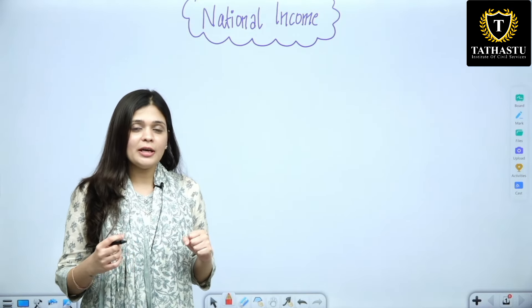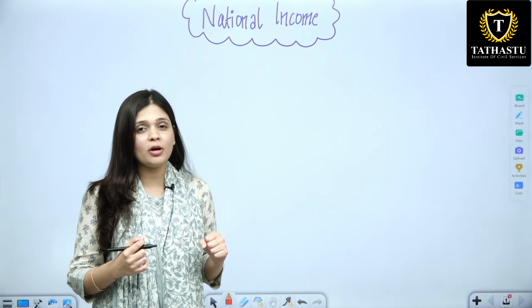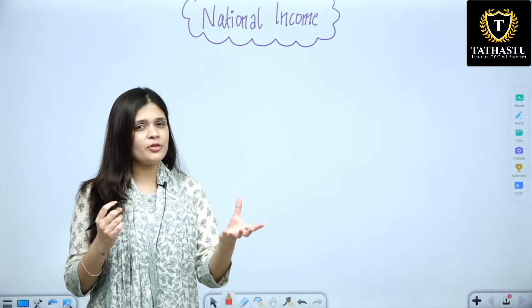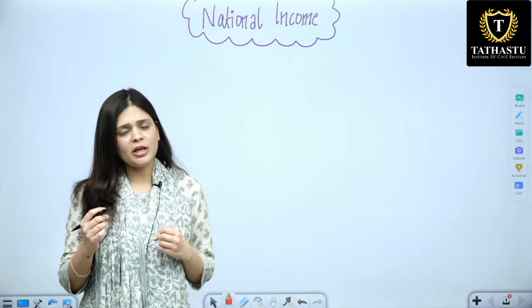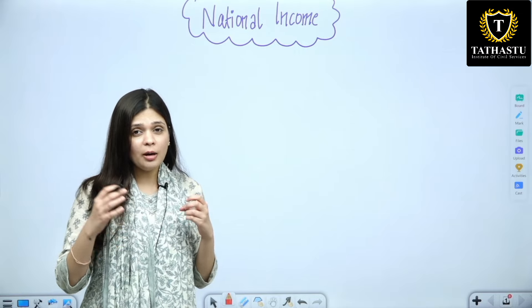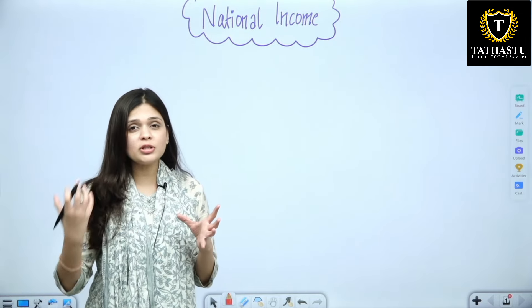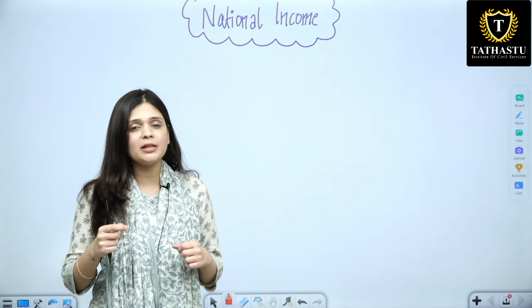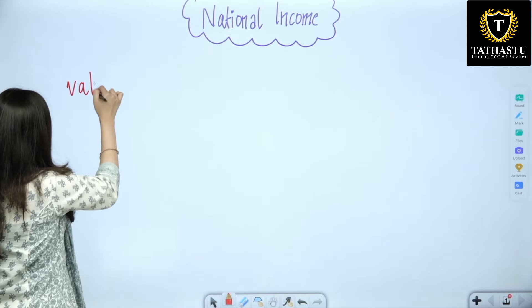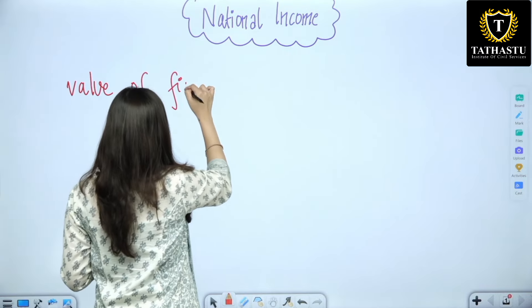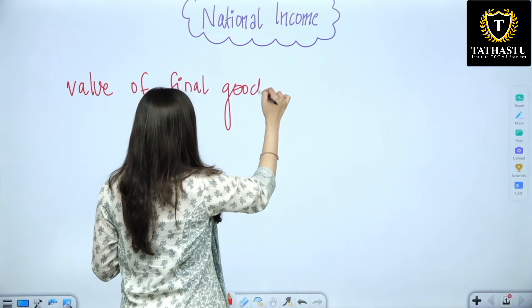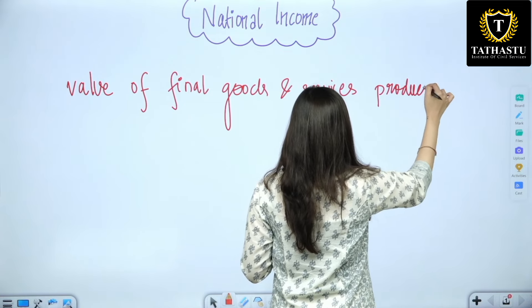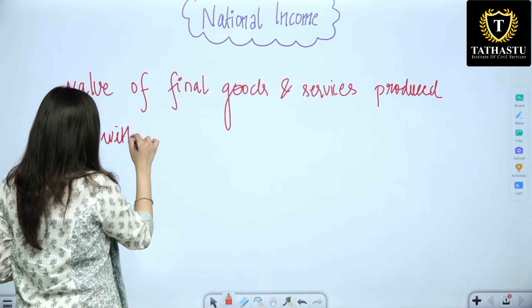When we talk about national income, our economist — the father of modern economics — Adam Smith defined the wealth of nations in 1776 in his work 'An Inquiry into the Nature and Causes of the Wealth of Nations.' According to his definition, the production value generated in one year would be considered the national wealth.